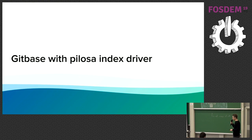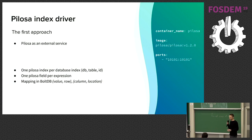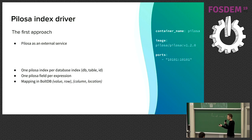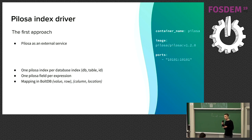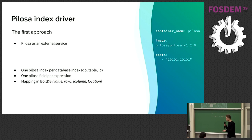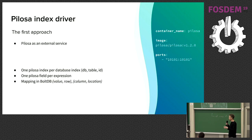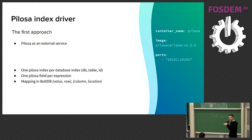The first approach to integrating Pilosa in GitBase was the simplest: run Pilosa in a container as a server. One Pilosa index mapped to one database index, and one field equaled one expression or column. We had to add a mapping because bitmaps are just a matrix of rows and columns, so you need to map values to row/column positions. But eventually we decided we didn't want to maintain yet another server or troubleshoot synchronization problems.